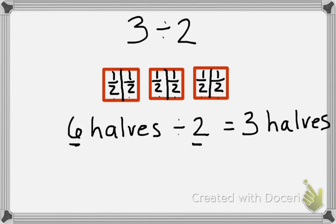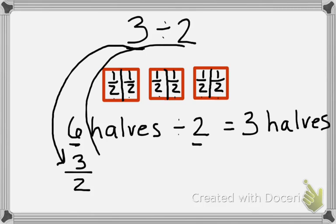Now another way to write three halves would be three over two. Now if you notice again in the problem, the three matches the numerator and the two matches the denominator. But because this is an improper fraction, we need to turn it into a mixed number.